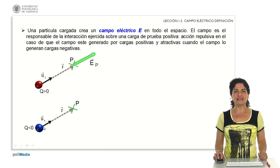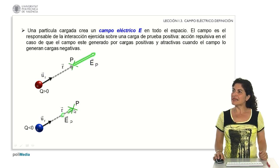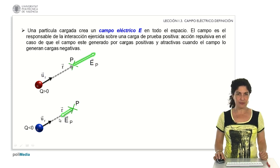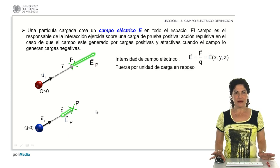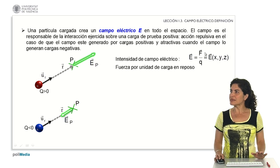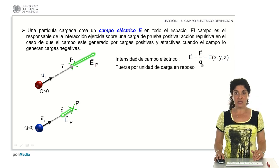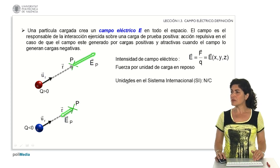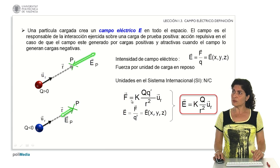If we do the analysis for negative charges by placing the test charge at point P, the interaction experienced is an attractive one. We define the electric field as the force experienced by a positive test charge at the point of study. It is a vector quantity — the quotient of the vector electric force divided by the scalar magnitude of the charge. Its units in the international system are Newtons per Coulomb.